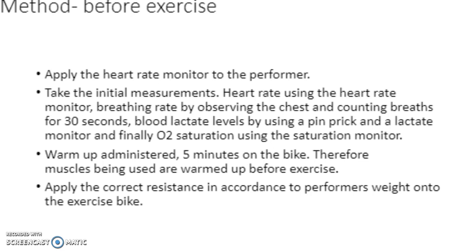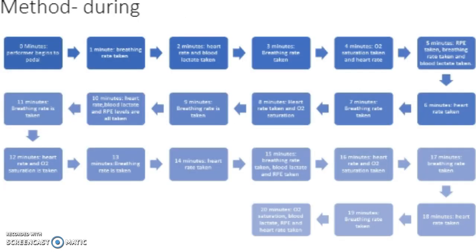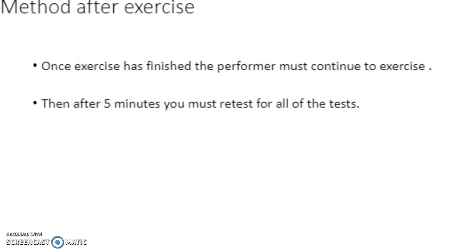Our methods before exercise: apply the heart rate monitor to the performer and take initial measurements — heart rate using the heart rate monitor, breathing rate by observing the chest and counting breaths for 30 seconds then multiplying by 2, blood lactate levels using a finger prick and a lactate monitor, and O2 saturation using the saturation monitor. Then administer a warm-up — 5 minutes on the bike to warm up the muscles. Finally, apply the correct resistance in accordance with the performer's weight onto the exercise bike.